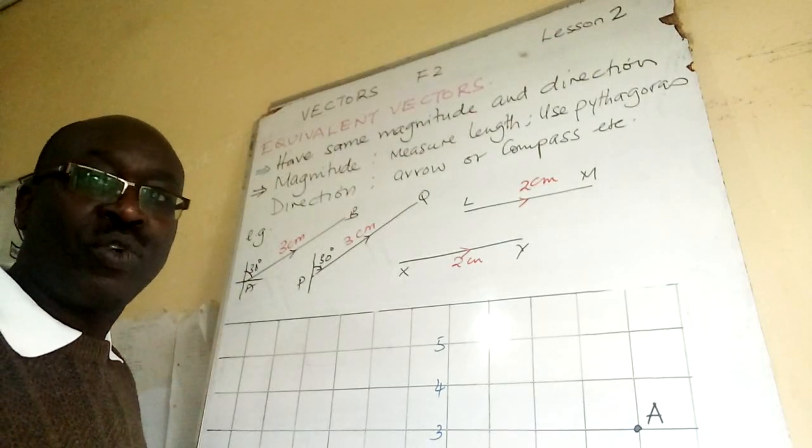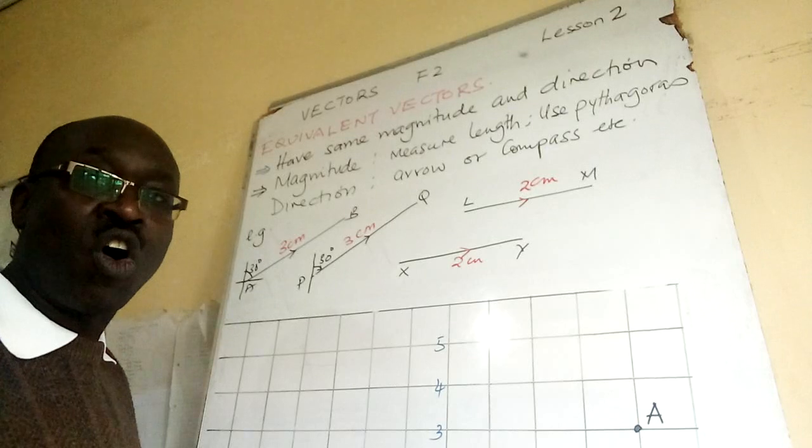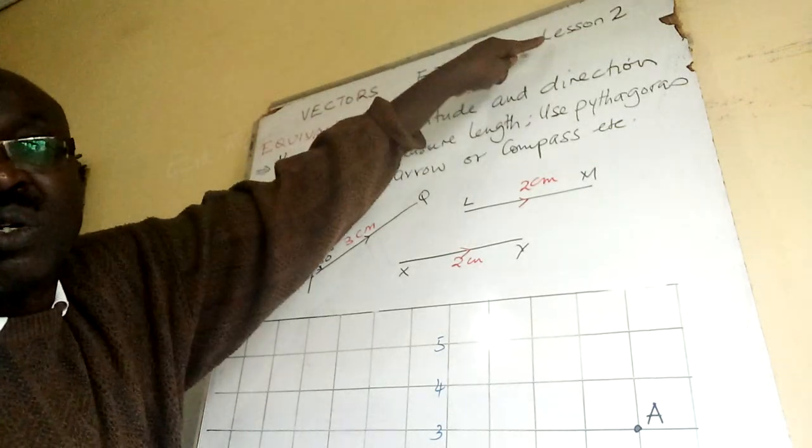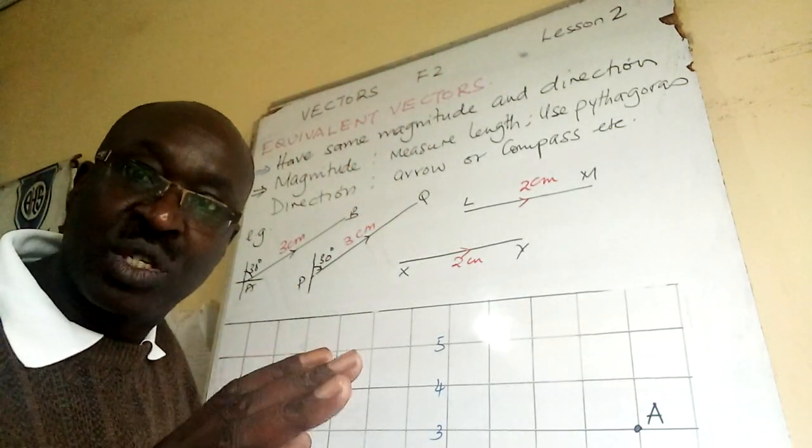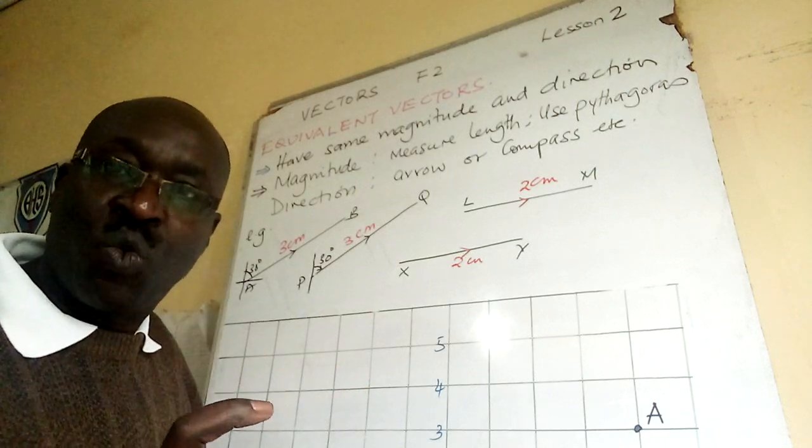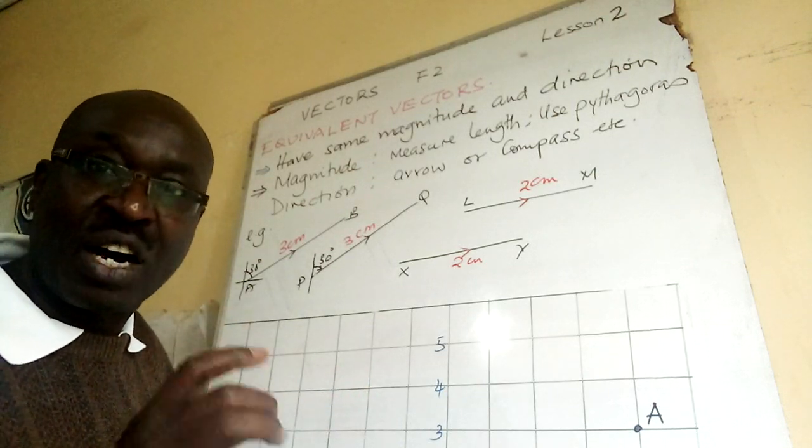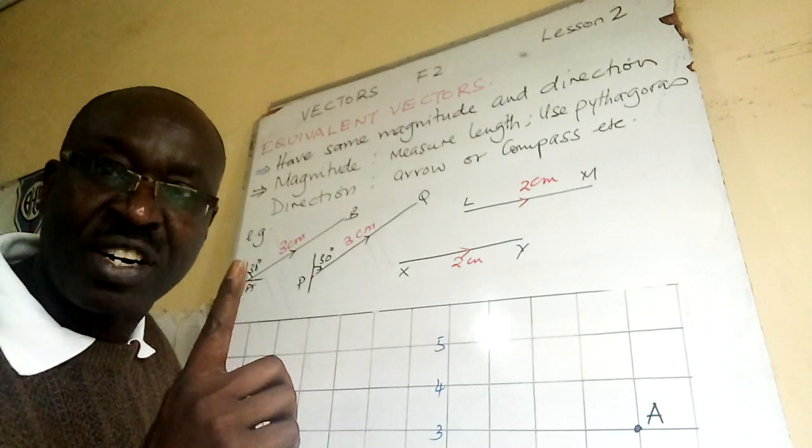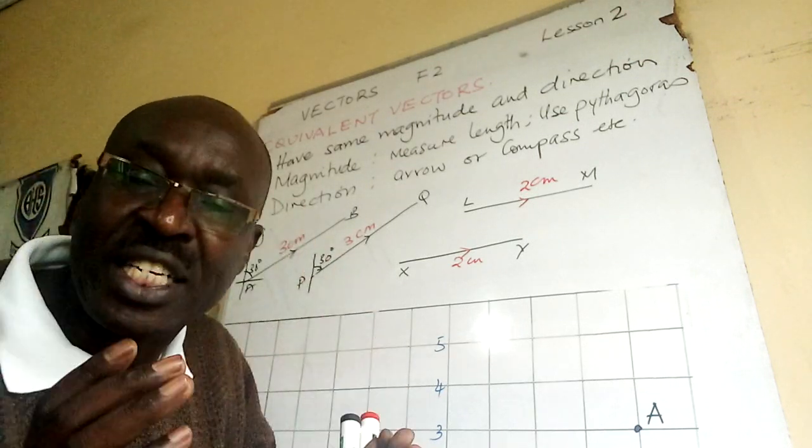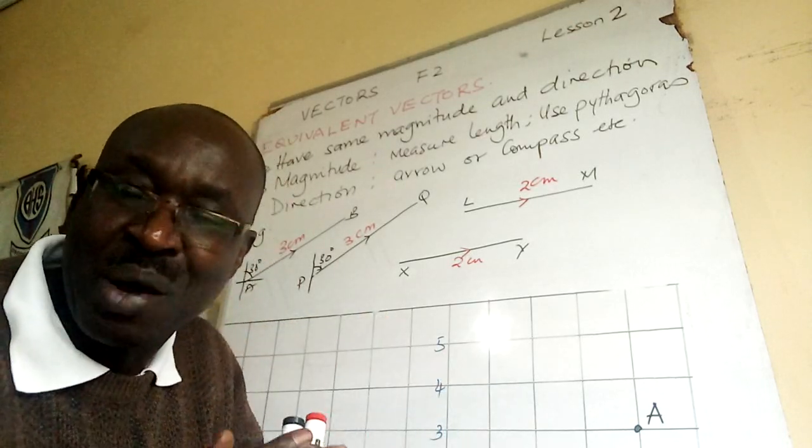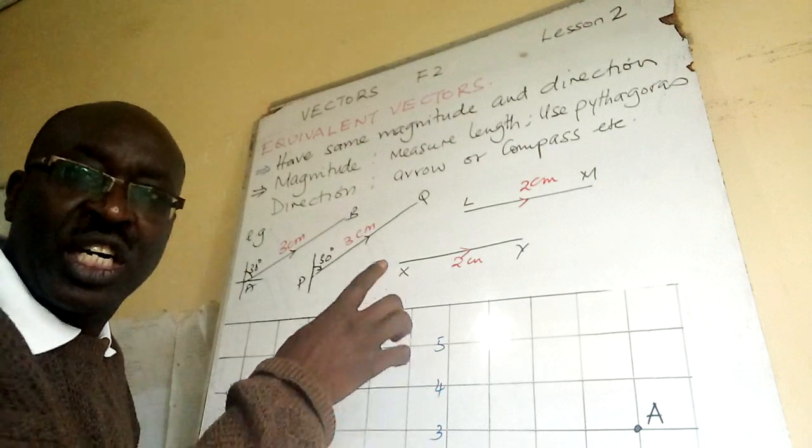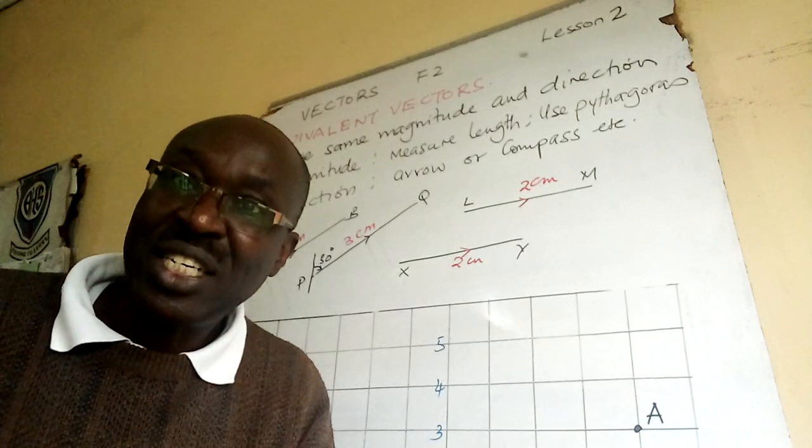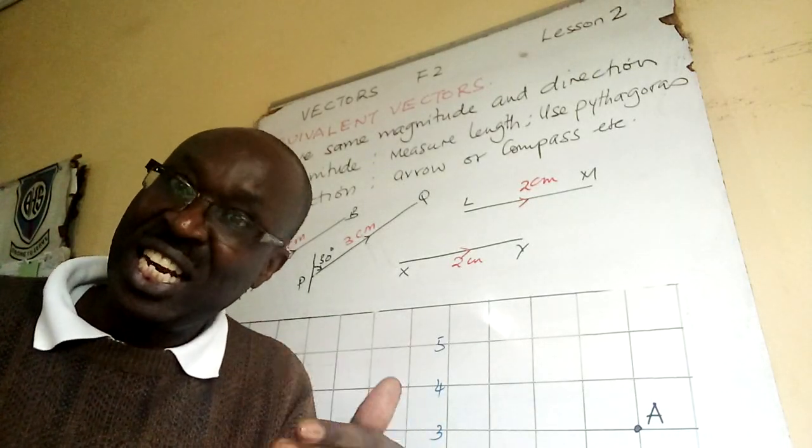Welcome folks to our second lesson on vectors, Form 2. Lesson 1 was about introduction where we defined what is a vector quantity - it must have size and direction. In this lesson our focus is on equivalent vectors.